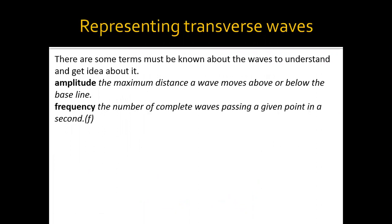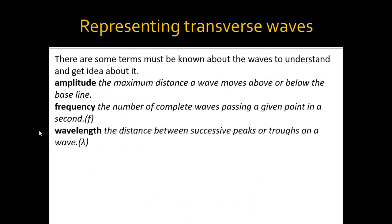The second term is frequency. Frequency is the number of complete waves passing a given point in one second. The unit is one over second, which is the same as hertz (Hz). We abbreviate frequency using the letter f. The third term is wavelength, which is the distance between successive peaks or troughs of the wave. We use the Greek letter lambda (λ) to represent wavelength.